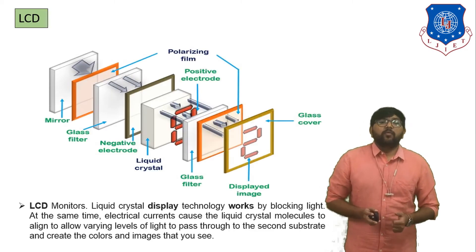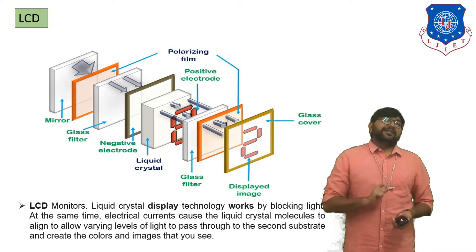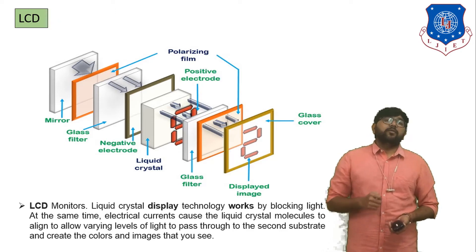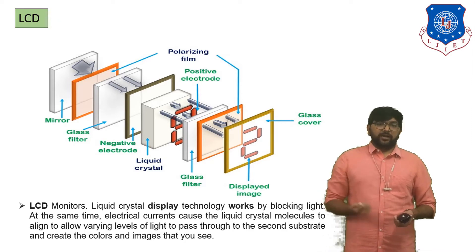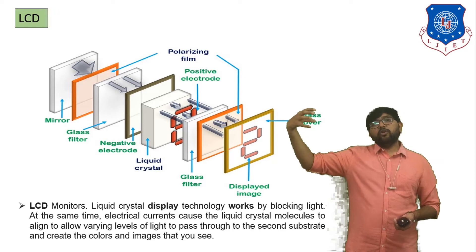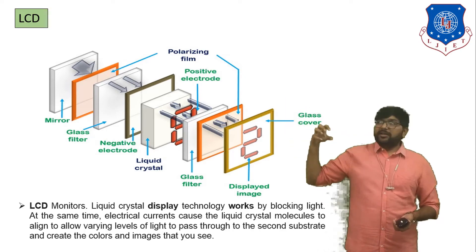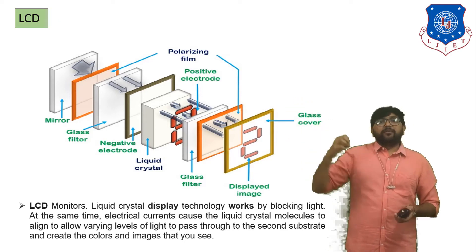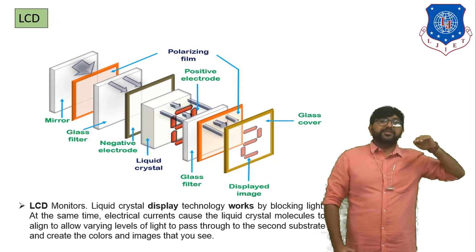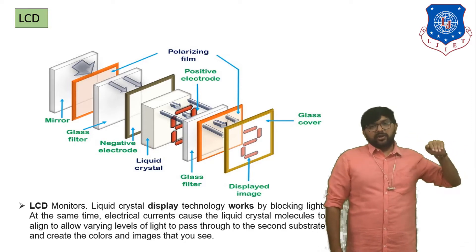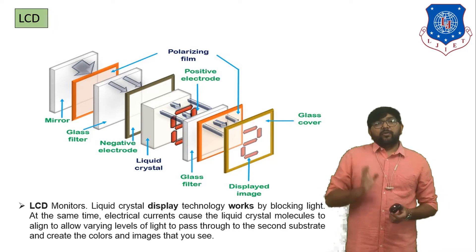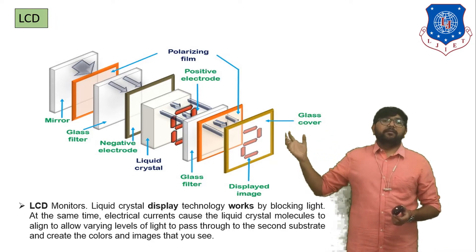Next topic is LCD. The full form of LCD is Liquid Crystal Display. To understand LCD, first you must understand polarization and the polarization filter. The function of a polarizing filter is: if electromagnetic waves come from uneven directions and you want to pass them through the polarizing filter, the filter converts all the uneven-direction electromagnetic waves into a straight direction — either horizontal or vertical. This is the simple function of a polarization filter.